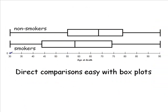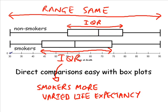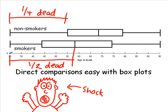Looking at them side by side, the lower and upper quartile and median are all lower for smokers, meaning that a good many of them die younger than non-smokers. The overall range is the same, but the interquartile range for smokers is a bit bigger than non-smokers — that most representative half of the smokers have more varied ages of death. Perhaps the most startling observation is that in the time it takes for about a quarter of the non-smokers to die, a half of the smokers are already dead.